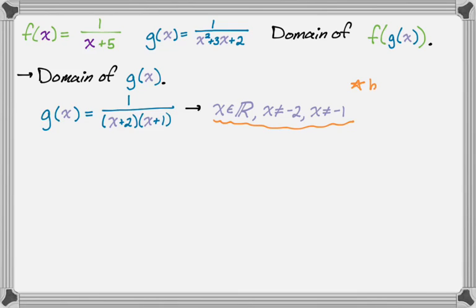Alright, so that's the domain of g(x), and it's important to realize that that right there is the biggest possible domain that f of g of x could have. So when we write the domain of f of g of x, we're going to start with x is an element of the reals, x is not negative 2, x is not negative 1. And then from there we might actually limit the domain even more, but it can't get bigger.